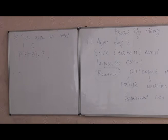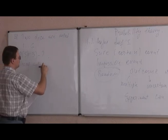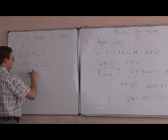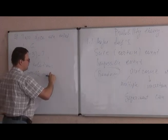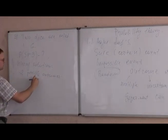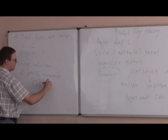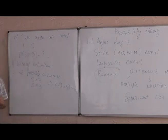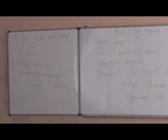There are two types of solutions. The wrong solution means we have two possible outcomes: the first is S equals three, the second is S does not equal three, so the probability is one half. This is completely wrong logic. Many people understand this is wrong logic, but not too many can explain why. Can you explain why this logic is wrong?